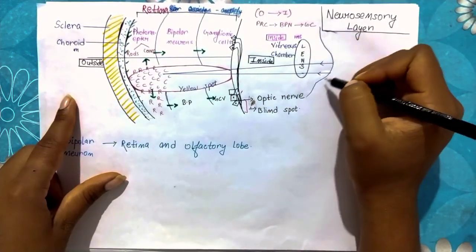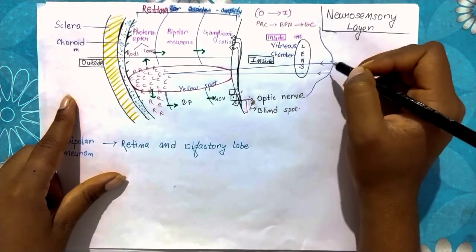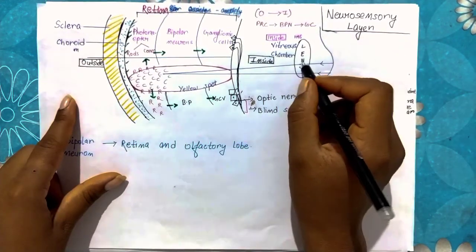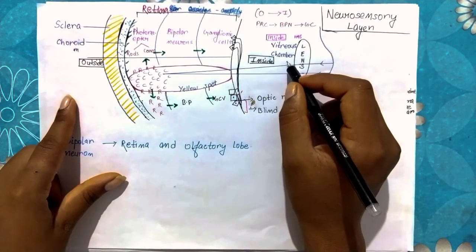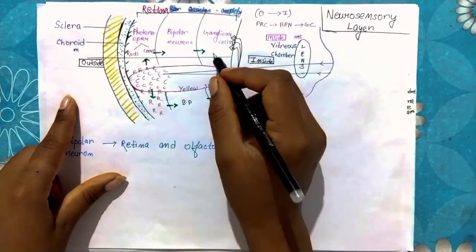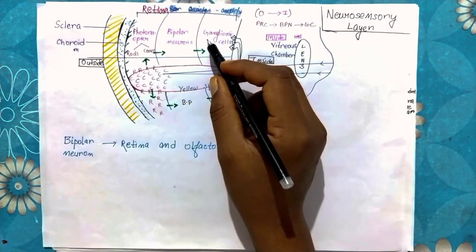This is the conjunctiva layer and the lens is present. Behind the lens is a vitreous chamber which is a jelly-like fluid.